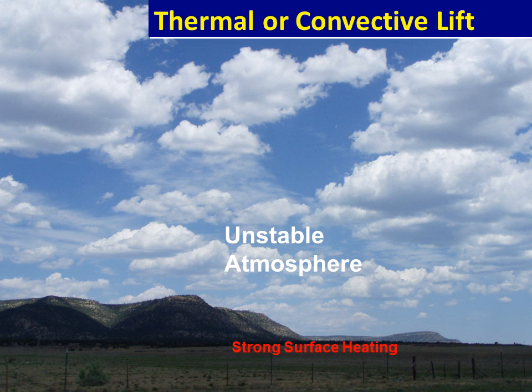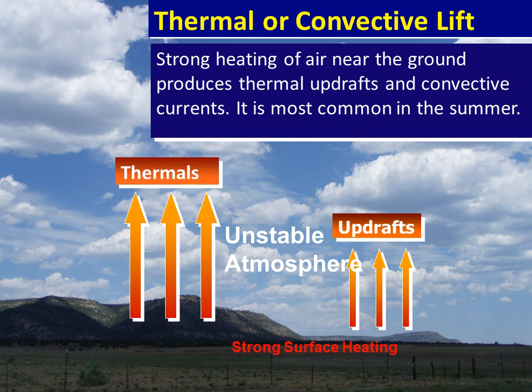In unstable conditions, temperatures will decrease rapidly with height. You will have warmer air near the surface and colder air above it. This leads to upward movement of air, which we call convective lift. Strong surface heating can lead to convective lift due to an unstable atmosphere. In the presence of adequate moisture, convective lift in the spring and summer months can often lead to very heavy precipitation or even severe weather, since convective lift can generate very strong upward motions.